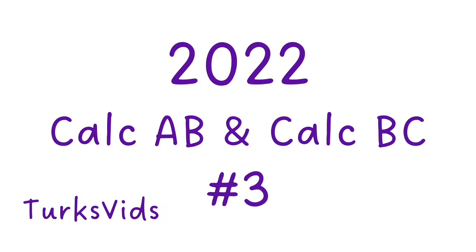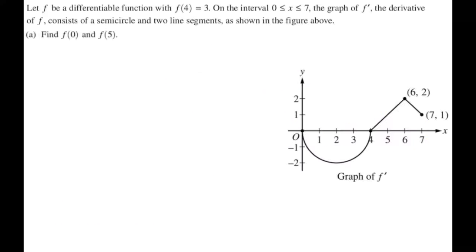In this video, we're going to do number 3 from the 2022 Calc AB and BC exams — they had the same problem. It's a problem where you're given a graph of the derivative and asked all kinds of questions. Let f be a differentiable function with f of 4 equals 3. On the interval from 0 to 7, the graph of f prime consists of a semicircle and two line segments.